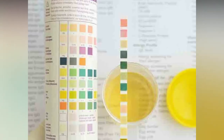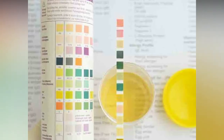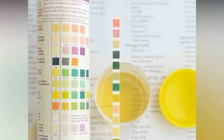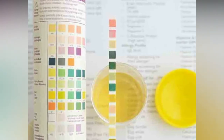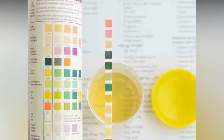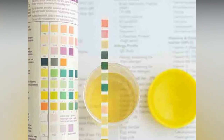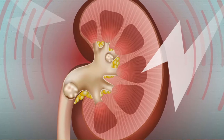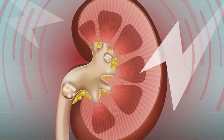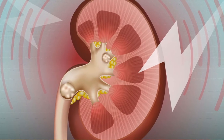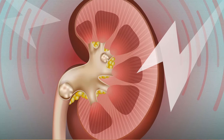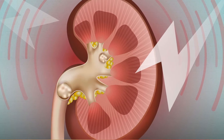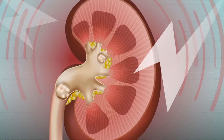If the levels of these particles become too concentrated or the urine becomes too acidic, then the particles can stick together and crystallize and thus become a kidney stone.